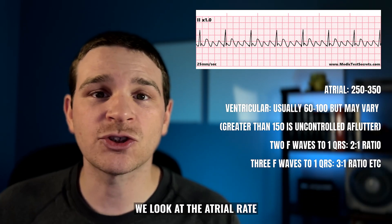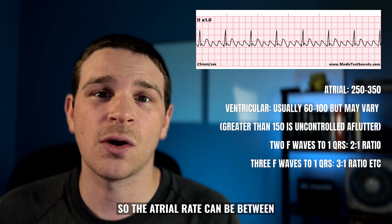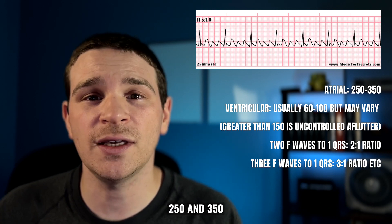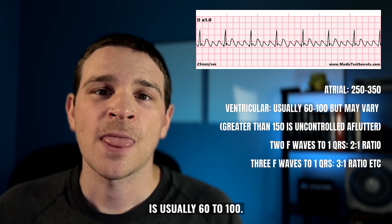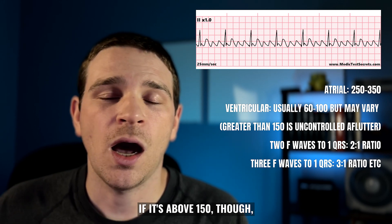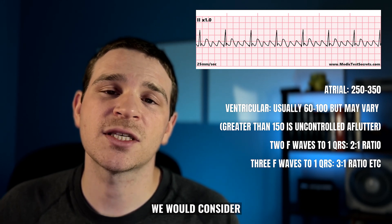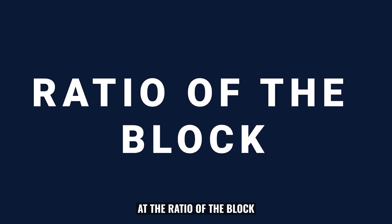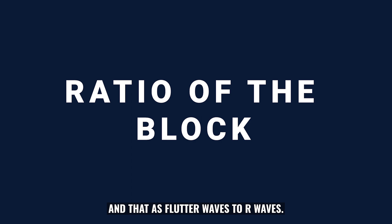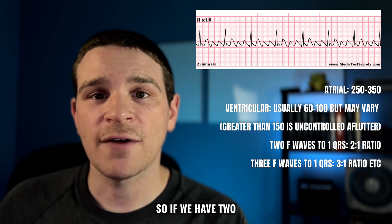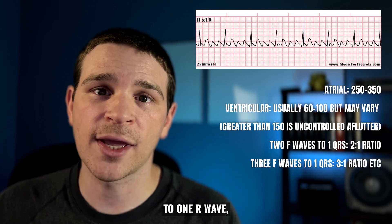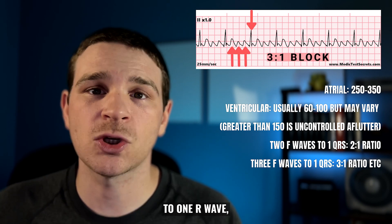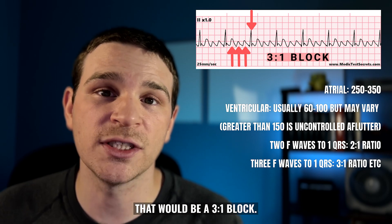With atrial flutter, we look at the atrial rate and the ventricular rate. The atrial rate can be between 250 and 350, and the ventricular rate is usually 60 to 100. If it's above 150, we would consider that an uncontrolled atrial flutter. We can also look at the ratio of the block — flutter waves to R waves. Two flutter waves to one R wave is a 2:1 block; three flutter waves to one R wave is a 3:1 block.